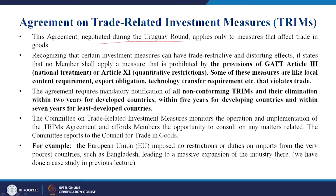Recognizing that certain investment measures can have trade-restrictive and distorting effects — anti-competitive or dominant companies can exploit a developing country — the agreement states that no member shall apply a measure prohibited by GATT under national treatment policy or quantitative restrictions policy. Some of these measures include local content requirements, export obligations, and technology transfer requirements that violate trade. There was a fundamental difference between developed and developing countries on this.